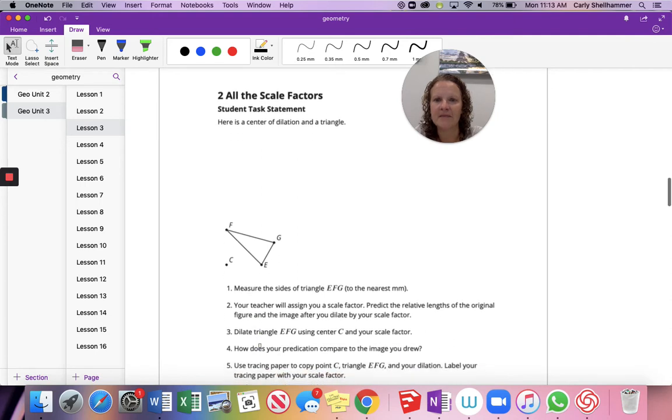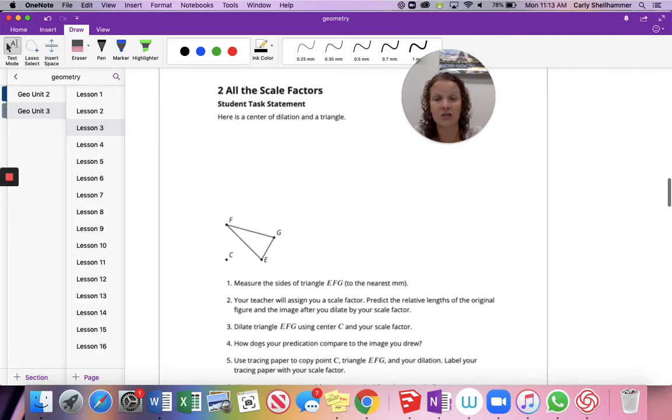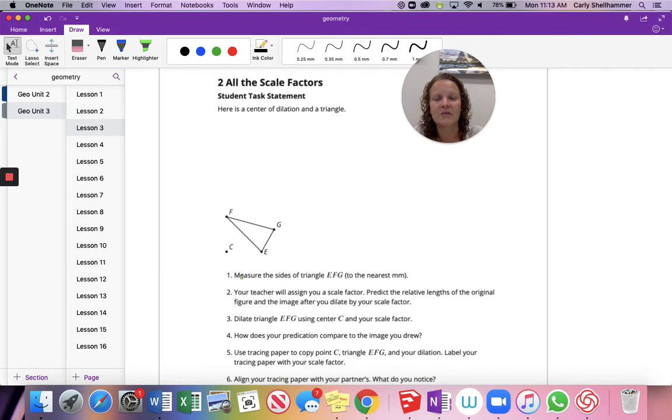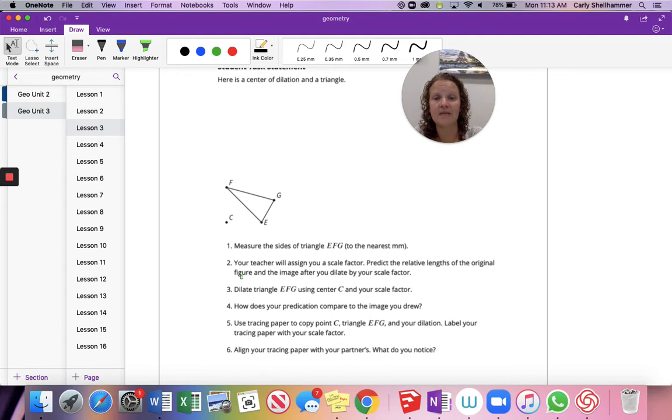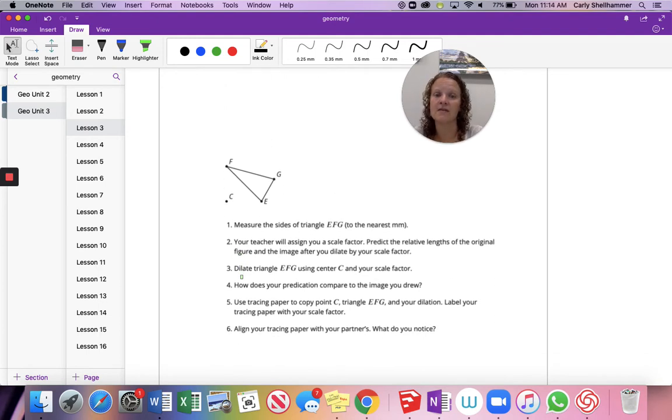So here is a center of dilation and a triangle. So let's talk through the steps real quick. It says measure the size of the triangle to the nearest millimeter using your ruler. Your teacher will assign you a scale factor. Predict the relative lengths of the original figure and the image after you dilate it by your scale factor. Dilate it. How does your prediction compare to the image you drew? I'm going to pause for a second and get back to Geogebra. We're going to do this one more time.